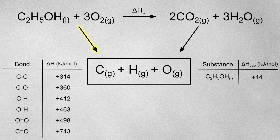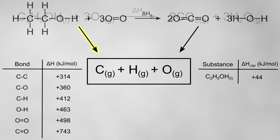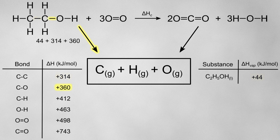On this arrow, I'll put the enthalpy of vaporization for ethanol as well as the relevant bond enthalpies for the reactants. If we look at the bonds in our reactant molecules, there is a single C-C bond, a single C-O bond, 5 C-H bonds, and a single O-H bond in ethanol. Oxygen contains an O=O double bond, but there are 3 moles of oxygen in this reaction, so we'll need to multiply this by 3.